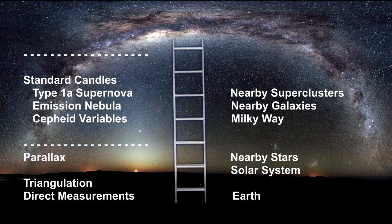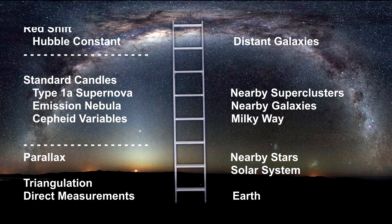The final rung on the ladder is redshift and the Hubble constant. The most distant galaxies are too far away to see Cepheid stars or supernovae explosions. For these, we owe our thanks to Edwin Hubble, who discovered a relationship between the speed that a galaxy is traveling away from us and its distance from us.